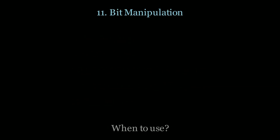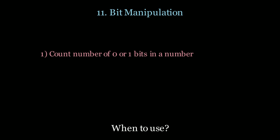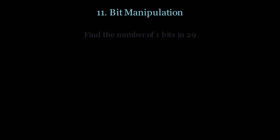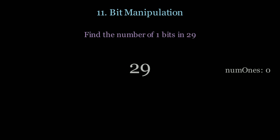Next up is bit manipulation. Use this when you want to count the number of 0 or 1 bits in a number, if you need to add two numbers without using addition and subtraction, and finally if you need to find the missing number in a list. Let's see how this looks — if I want to find the number of 1 bits in 29, I first transform 29 to binary.